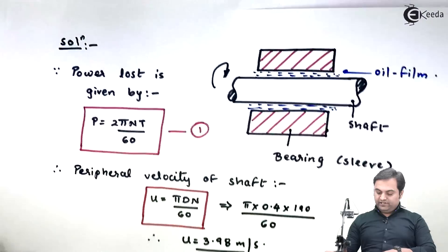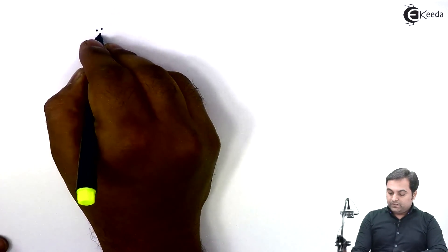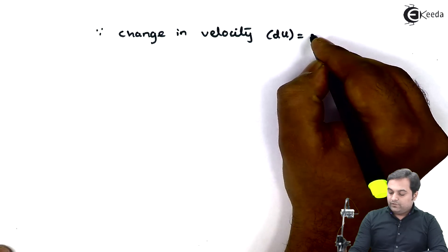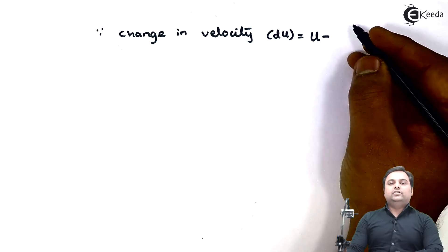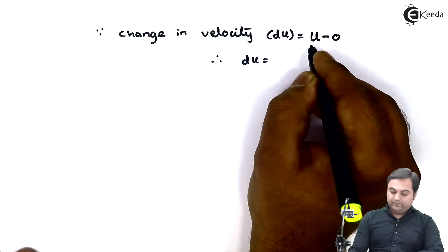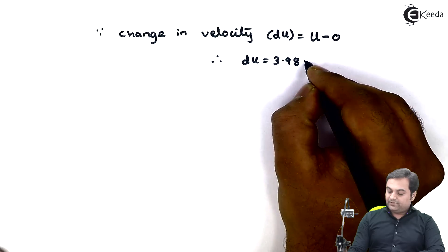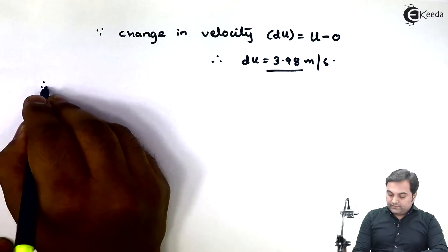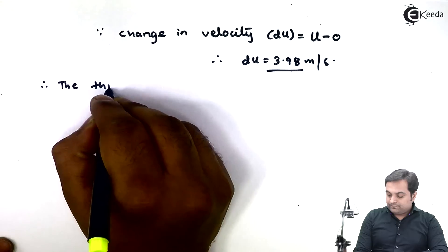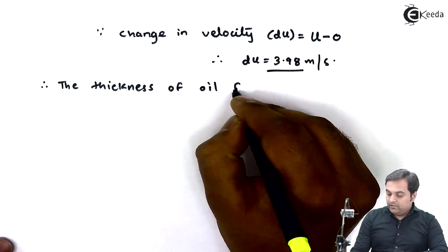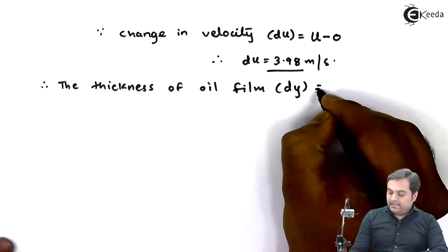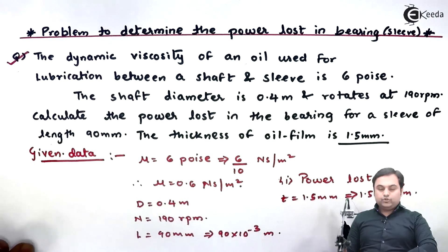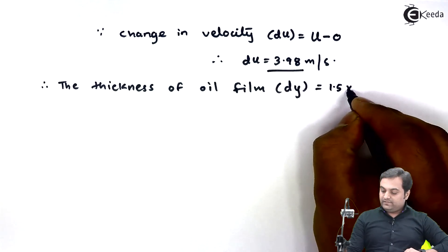Since the change in velocity du equals initial velocity minus final velocity, and the final velocity is taken as zero, the change in velocity du equals 3.98 meter per second. The thickness of the oil film, dy, is 1.5 mm, that is 1.5 into 10 raised to minus 3 meter.